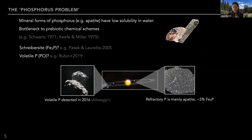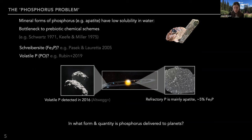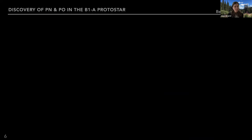This is the landscape of what we know from our own solar system. I am really interested in understanding how the different carriers and quantities of phosphorus might be inherited through the star and planet formation stages, and ultimately what forms and quantities of phosphorus might be incorporated into planets. A couple of years ago, we were very excited to discover the phosphorus carriers PN and PO towards the B1-A low-mass protostar.